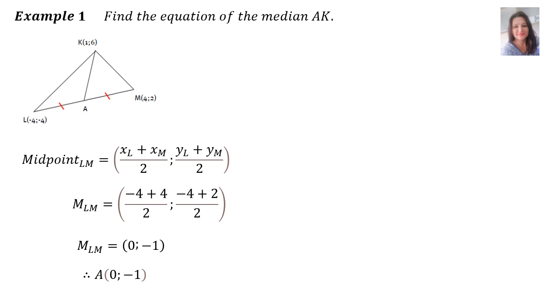And that is A's coordinate, 0, negative 1. We want to find the equation of the median AK and therefore we need a gradient. So now we can work out the gradient of AK with the gradient formula. Into the formula goes the coordinates of A, 0, negative 1 and K, 1 and 6.